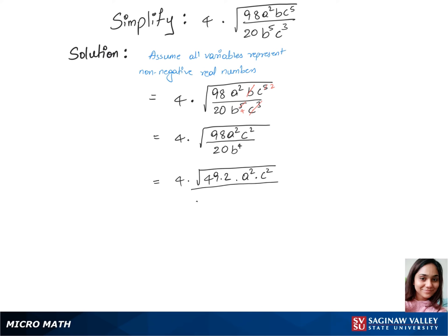Let's write 4 times, we'll separate square root between all those terms now. So let's write square root of 49 is 7² times square root of 2 times square root of a² times square root of c².